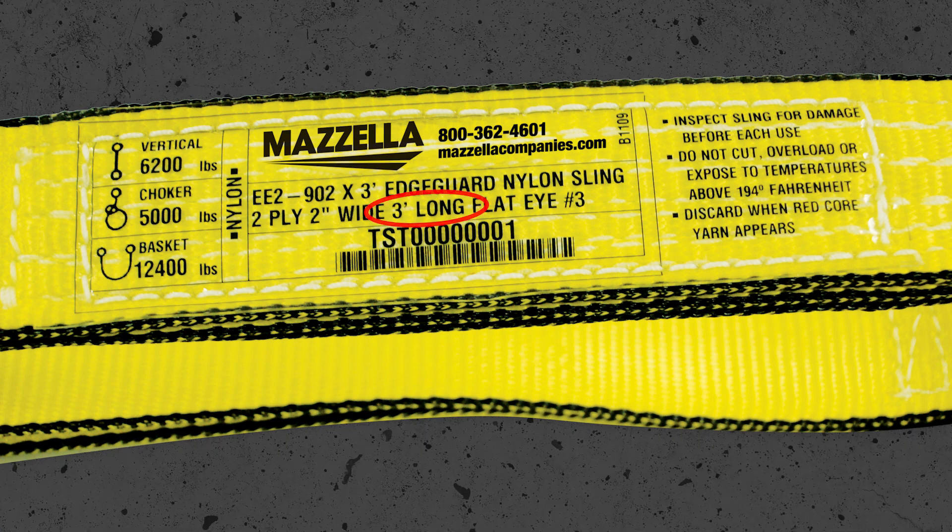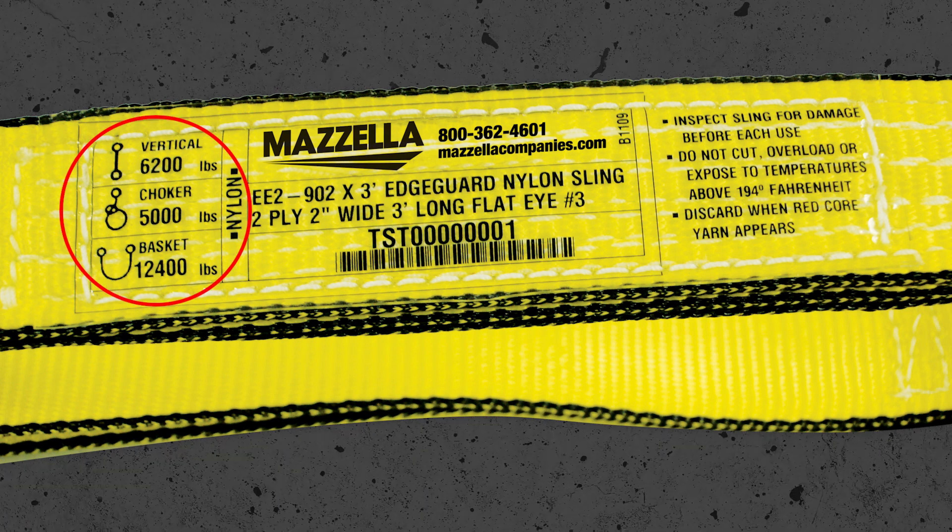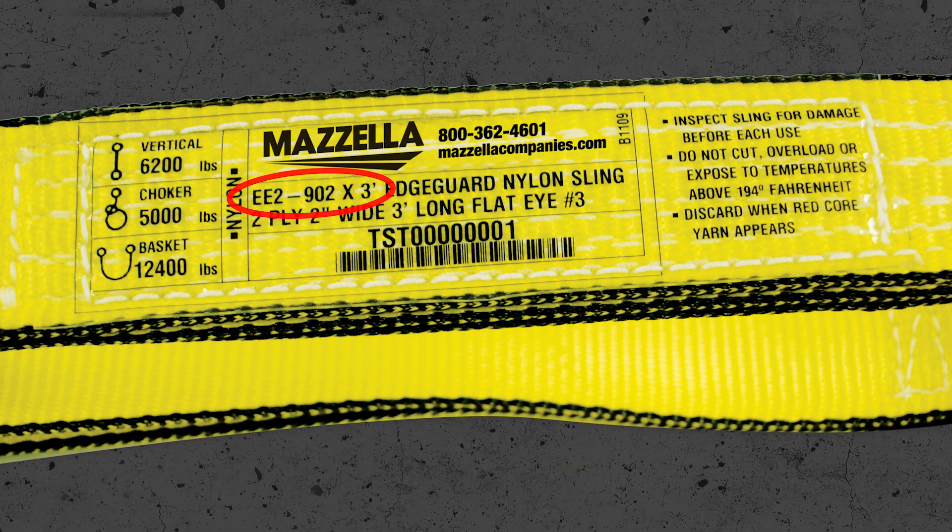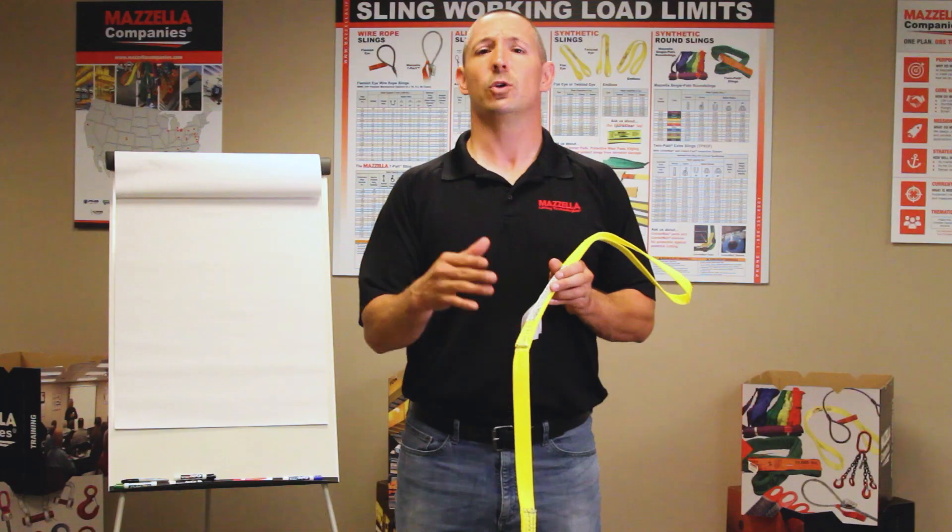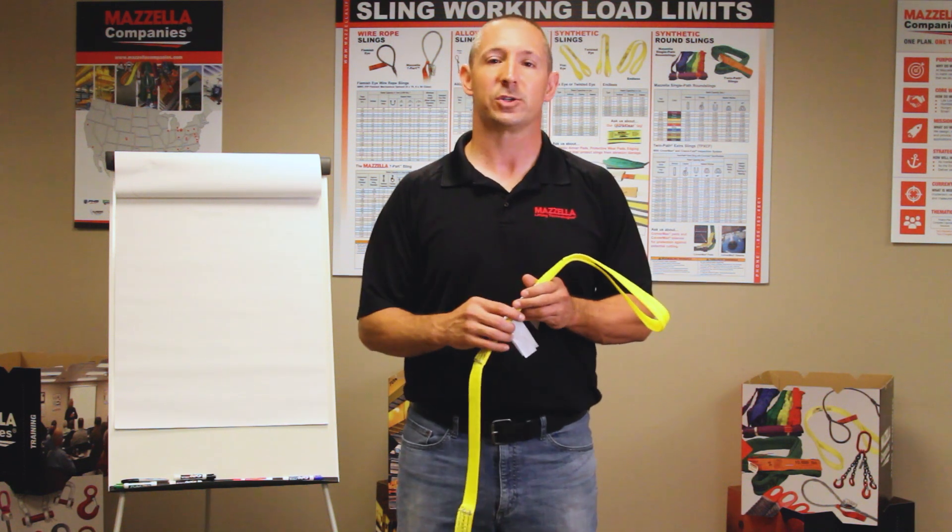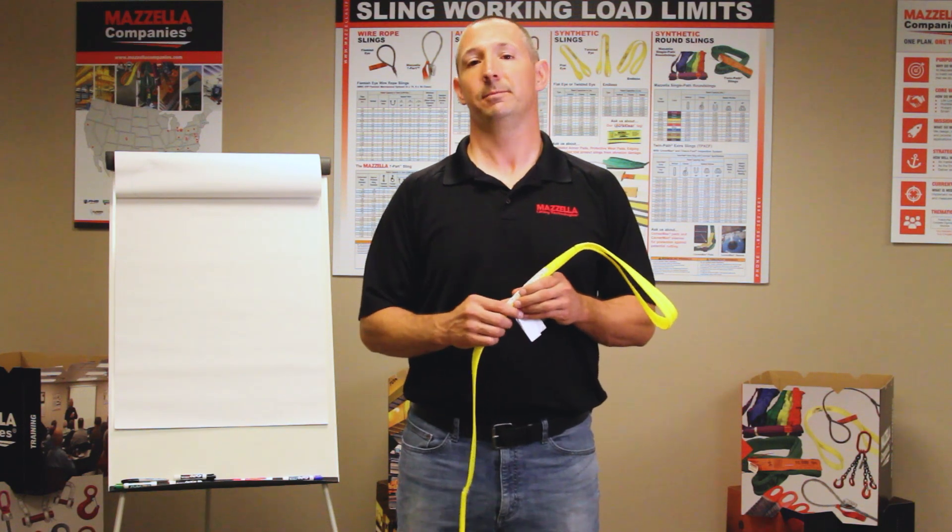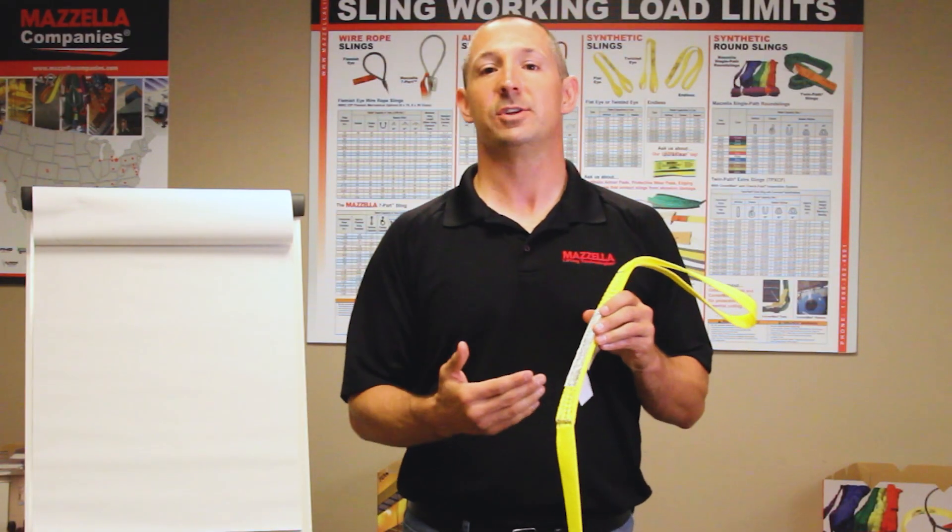It'll tell me the length of the sling. It's also going to tell me my capacities in a vertical, choke, and basket. And it's also going to tell me some nomenclature that we'll get into to identify the sling. So if you're ordering it or you see it on an order or a quote or a rigging inspection report that we give you, you'll understand how to identify what is on there. Let's go right into the nomenclature that we're going to talk about.